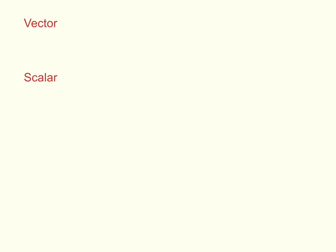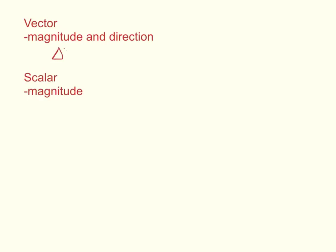Two words we want to become familiar with are vector and scalar. A vector by definition has both a magnitude and a direction, whereas a scalar has a magnitude only. Displacement is a vector because it has a magnitude and a direction — the direction being indicated by positive or negative. Positive means one direction, negative means the other, so it has both the value (two meters, three meters, etc.) and the sign telling us which direction it went.